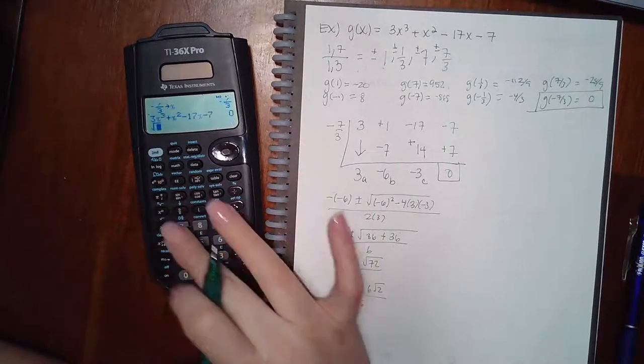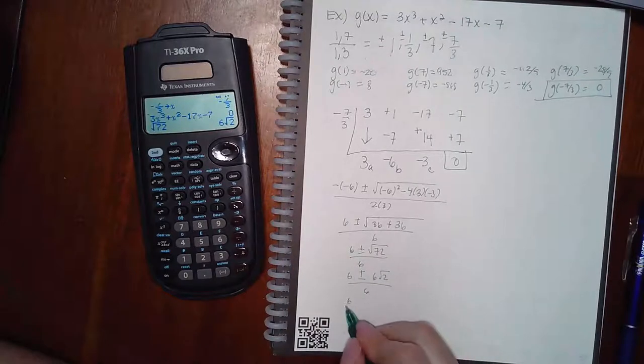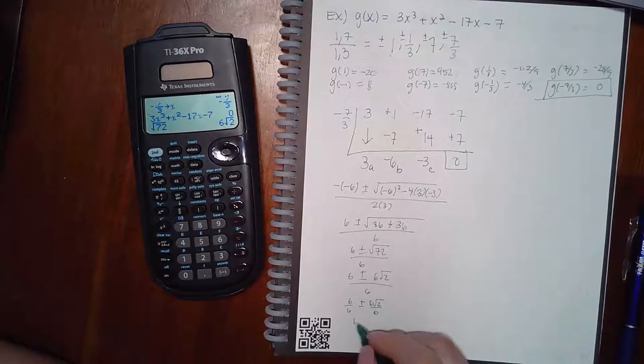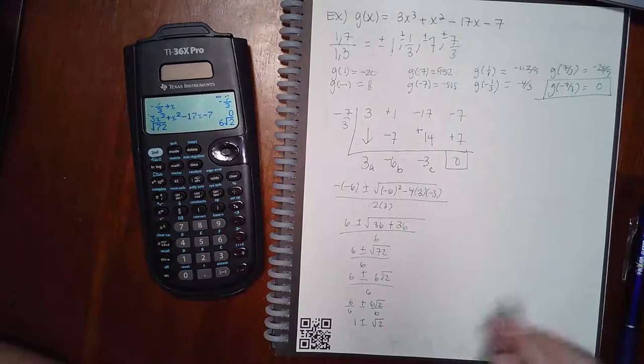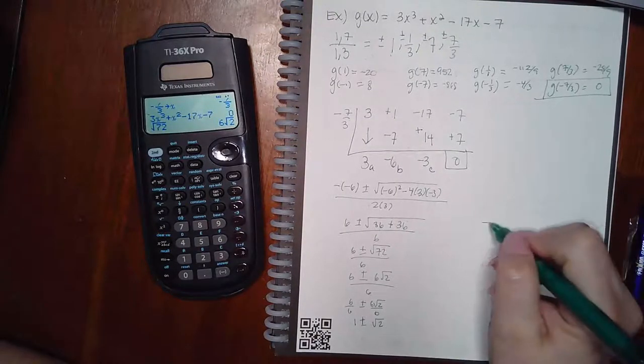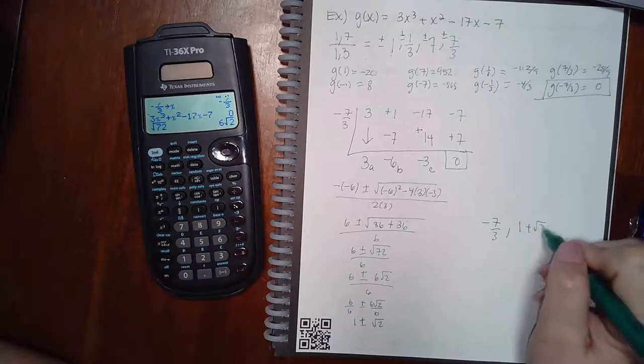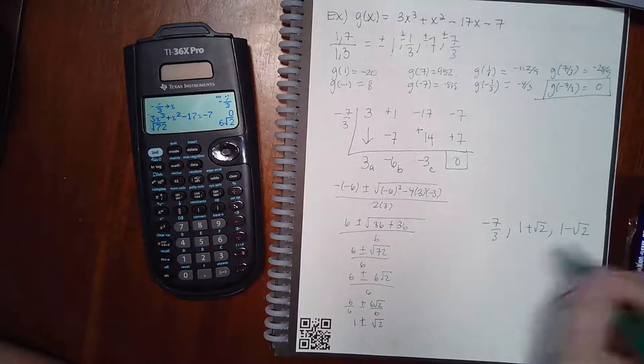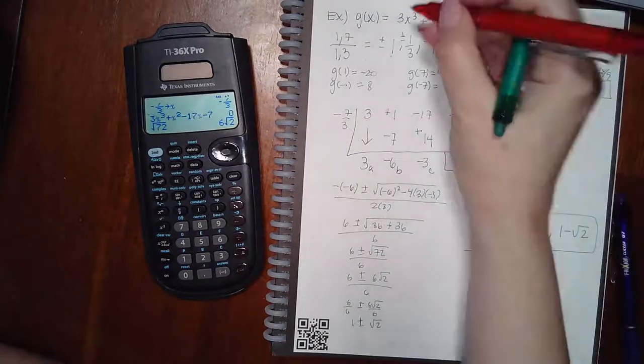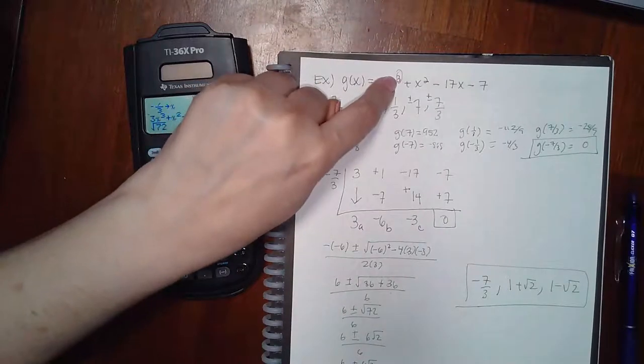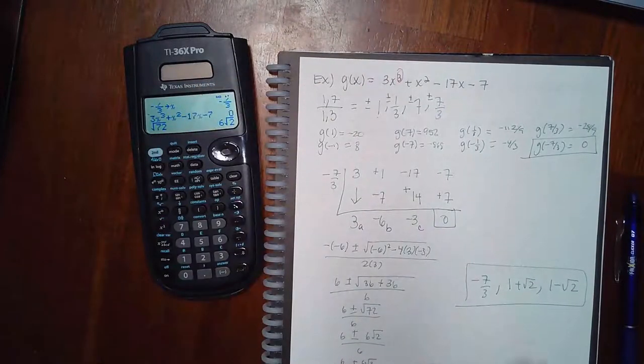Let me double check my square root of 72. Yep. So 1 plus or minus square root of 2 again. Coincident. So I get negative 7 thirds is 1, 0, and then 1 plus square root of 2, and 1 minus square root of 2. And I should only have 3 zeros, right? That's my highest exponent. And I do have all 3 zeros.